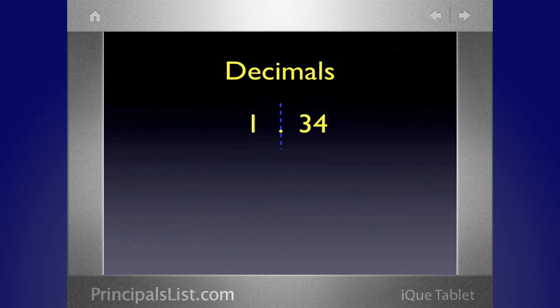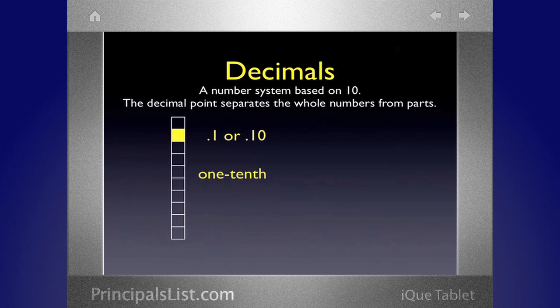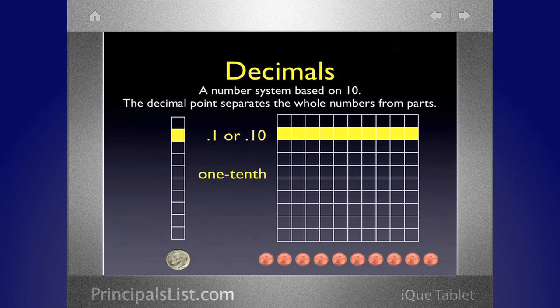So decimals are also parts of numbers. The decimal point separates the wholes from the parts. On the left of the decimal is the whole numbers, on the right is the parts. Here with the base 10 block, we have one whole on the left and 34 hundredths on the right. Here we have one whole and one of those is shaded, and that's one-tenth because it's cut into 10 pieces. You can think of it as like a dime. If that whole bar was like a dollar, one-tenth of it would be a dime. Ten dimes in a dollar.